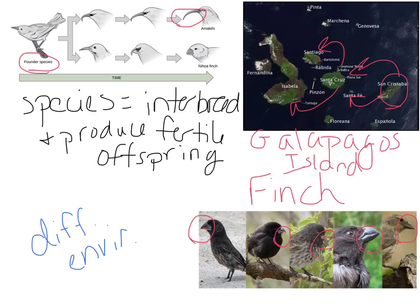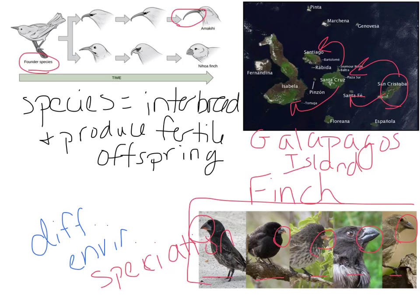Those birds that were born with a particular beak were able to get food better, and so they're the ones that reproduced. Over time, as natural selection worked on these birds, you started to see a shift in the population, and eventually that can lead to speciation — the formation of all these different types of finch. There are five different finch pictures here, and they are all a different species; they can no longer reproduce with one another and produce fertile offspring. This is an example of island speciation: the finches on different islands are isolated, they have different food sources, and eventually the population shifted so much that they are no longer able to interbreed.